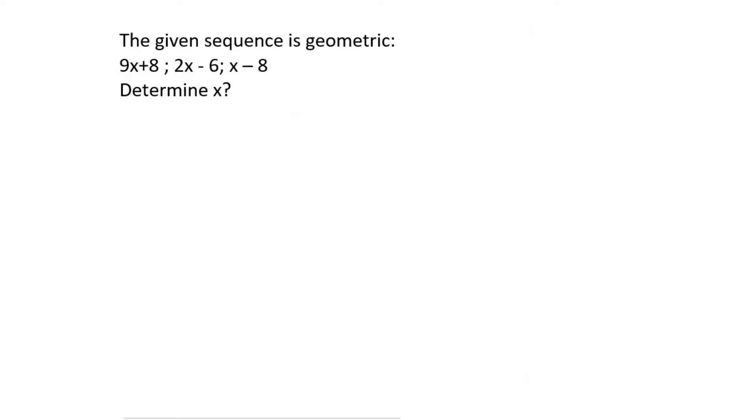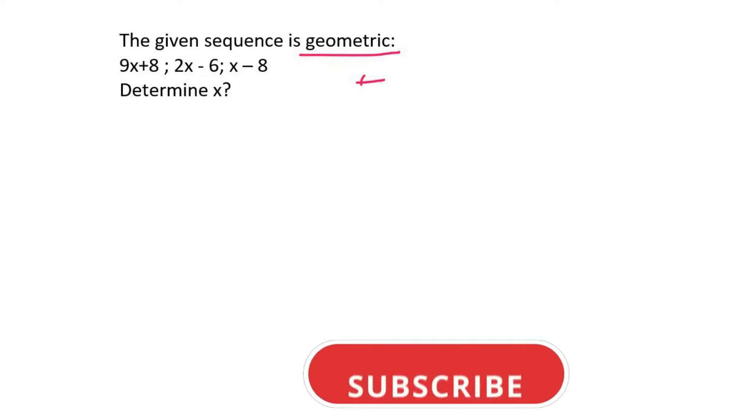In question 46, they tell us that this sequence is geometric. What that means is, let me show you a normal geometric sequence. Let's say we have 4, 12, and 36. That's geometric.